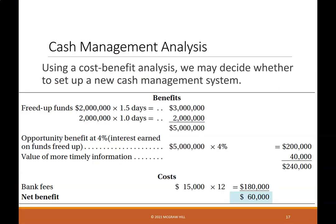Using a cost-benefit analysis, we may decide whether to set up a new cash management system. Benefits include freed-up funds and an opportunity benefit at 4% — interest earned on funds freed up plus the value of more timely information — equaling $240,000. Net bank fees are $180,000, so the money freed up from funds minus the bank fees equals a net benefit of $60,000.